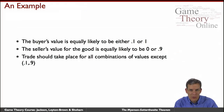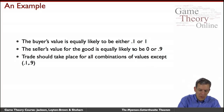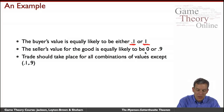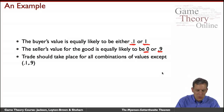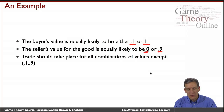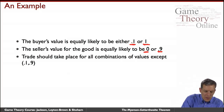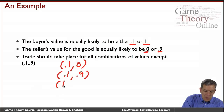Let's do a simple example useful for illustrating and proving the main theorem. The buyer's value can either be low at 0.1 or high at 1. The seller can either think the good is worthless (value 0) or they're really attached to it (value 0.9). We have four combinations listing buyer's value first, then seller's value: (0.1, 0), (0.1, 0.9), (1, 0), or (1, 0.9).